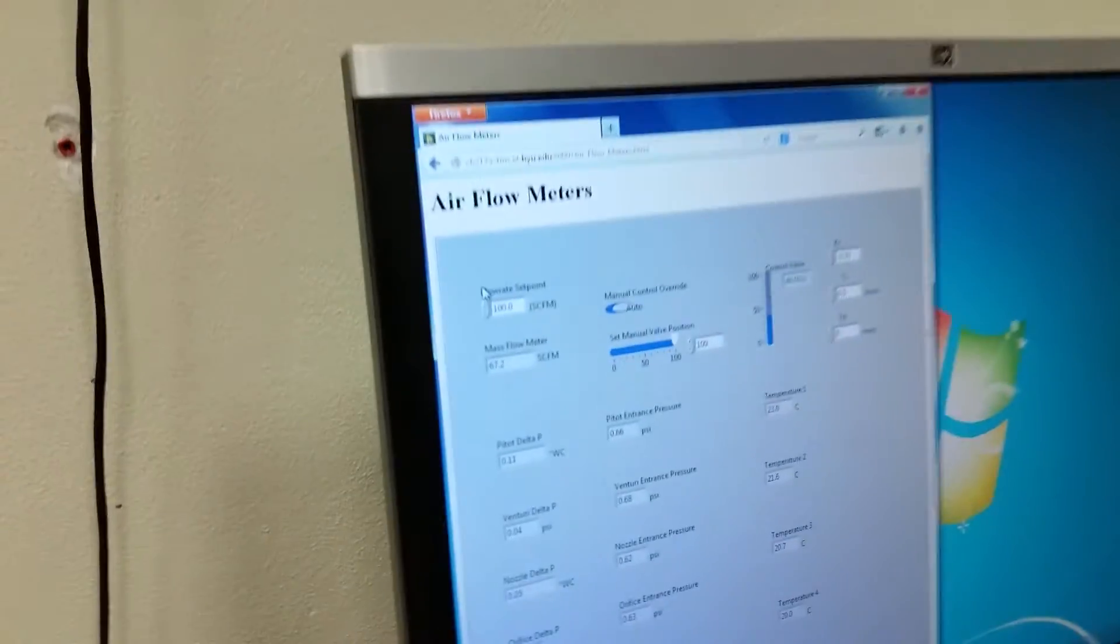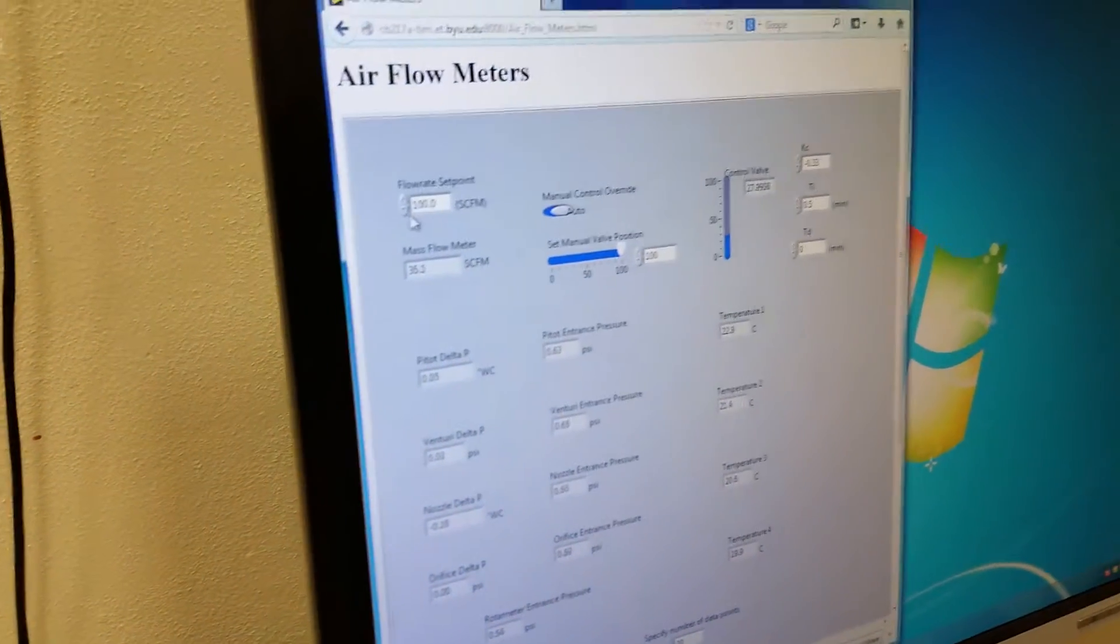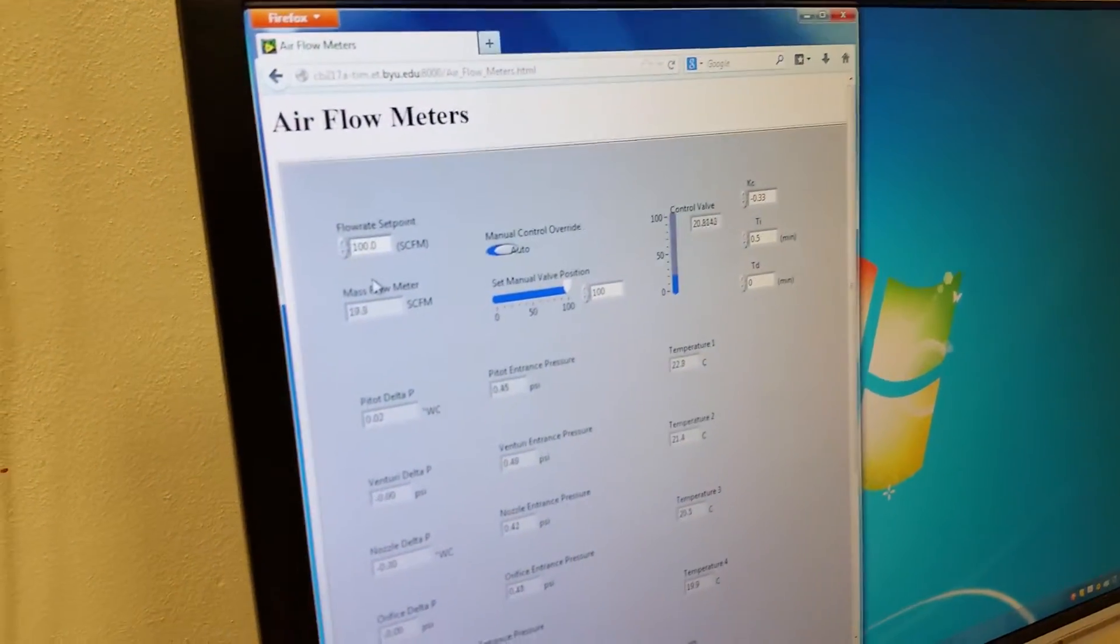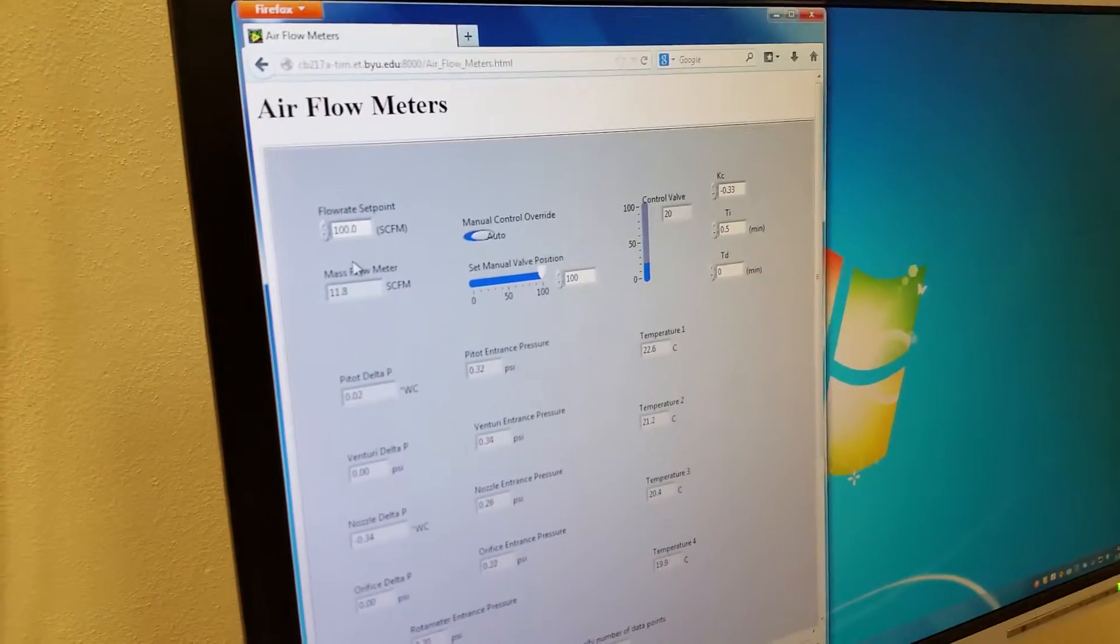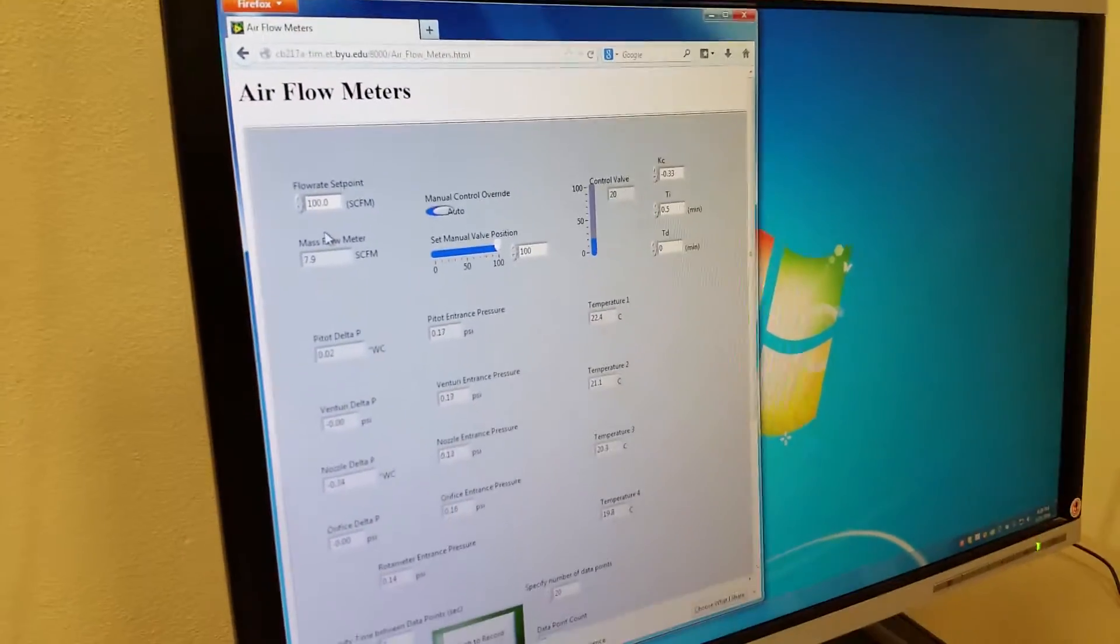So before you go and turn it down, make sure that you take your flow rate and you're constantly lowering it, lowering it, lowering it. Or again, if it crashes down to the bottom, you could break your equipment. So make sure to not do that.